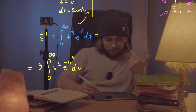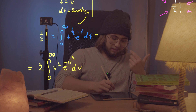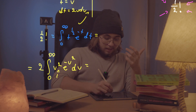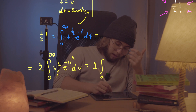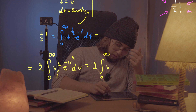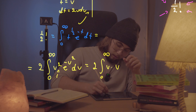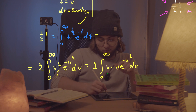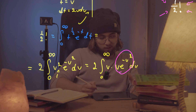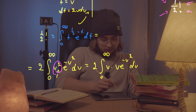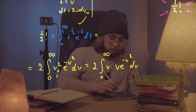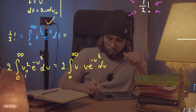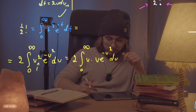I'd like to do integration by parts here. It's easier to rewrite this as u multiplied by u times e to the negative u squared, du — because it takes fewer steps to integrate when we separate it this way for integration by parts.